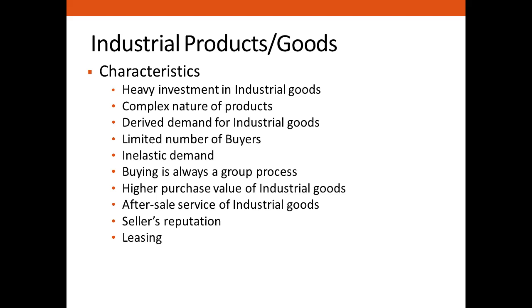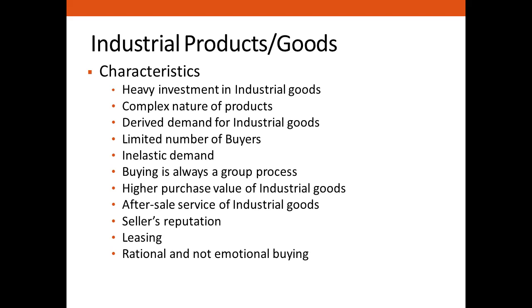Another peculiar feature of industrial goods marketing is leasing. The seller may enter into a leasing agreement with the user instead of making an outright sale of machinery. This does not apply to consumer goods. The next characteristic is rational and not emotional buying — in consumer goods, buying decisions are influenced by status, prestige, and emotional factors, but the buyer of industrial goods makes an objective analysis of the product before taking a purchase decision.